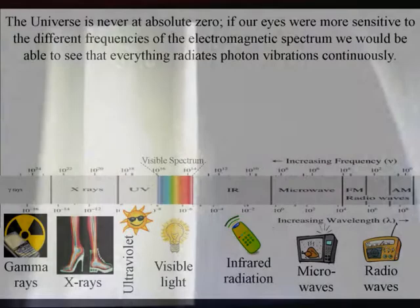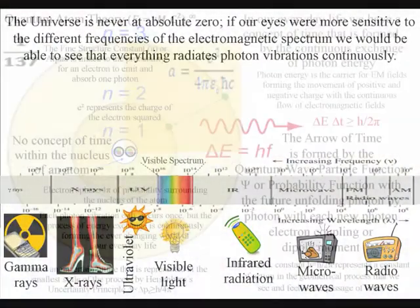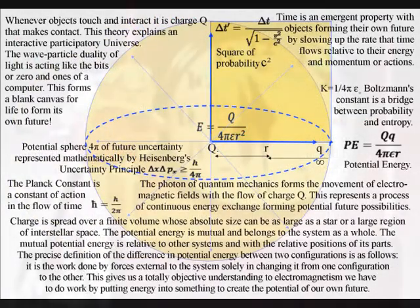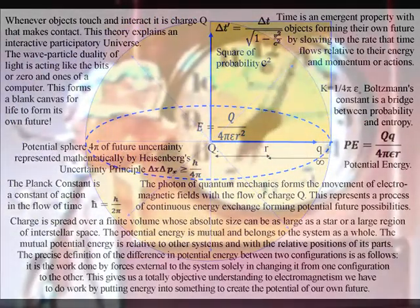That is formed by the spontaneous absorption and emission of light, with each photon oscillation or vibration only occurring once, forming the movement of charge and continuous flow of electromagnetic fields.